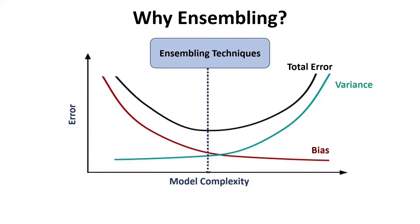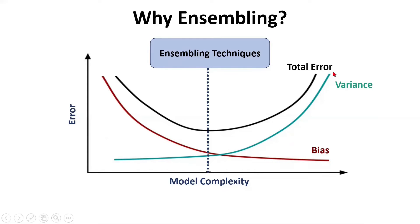Let's understand why we need ensemble. We're showing you a figure with error on the y-axis and model complexity on the x-axis. If the model complexity is low, we have a very high error called bias error. What is this bias error? It leads to a problem called underfitting — when you are not able to make a good model out of the given data. As you continue to make the model more and more complex, the bias error continues to reduce. However, at the same time, another type of error called variance error goes up.